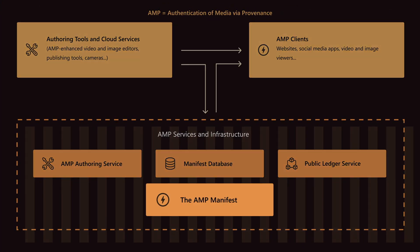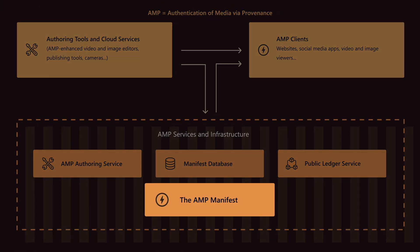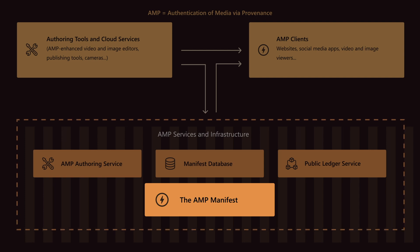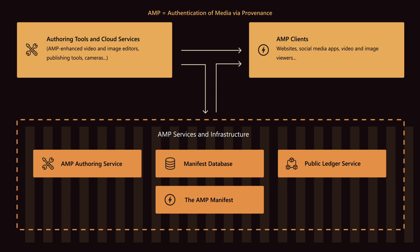So how do we add this provenance layer to video in Project Origin? The starting point is something we call a manifest. You can think of a manifest as a digital envelope that contains the video or other media and the metadata we talked about. The manifest is cryptographically bound to the video it's describing, and the purpose of the cryptographic binding is to make sure that any modification to the video will break the association between the manifest and the video. This is the way we guard against adversarial modification of the video — people modifying it to mislead the viewer.